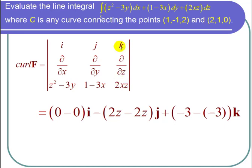And for the k component, I get del over del x of 1 minus 3x, that's negative 3, and then minus del over del y of z squared minus 3y, and that's also negative 3. So I get negative 3 minus negative 3k.